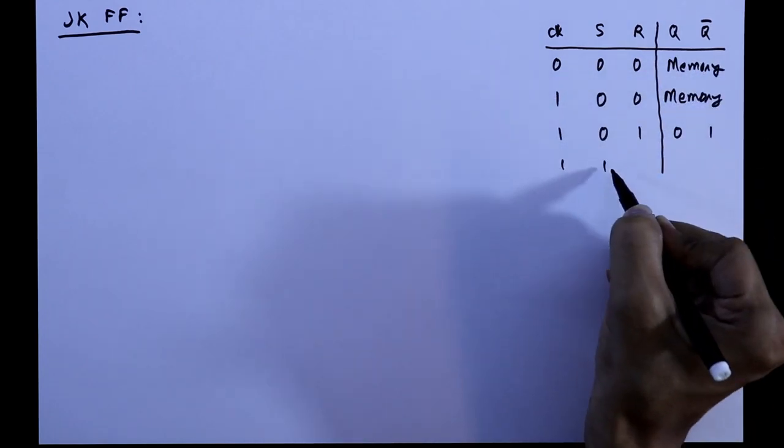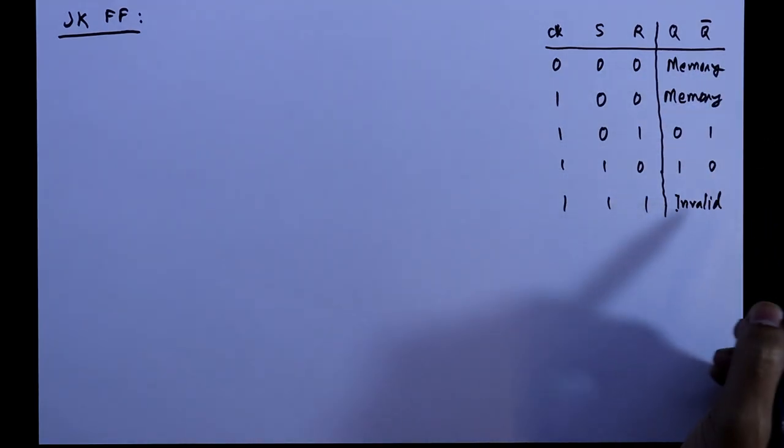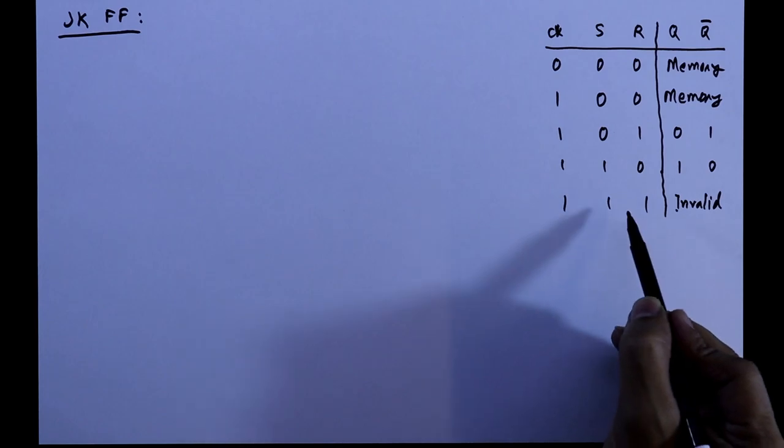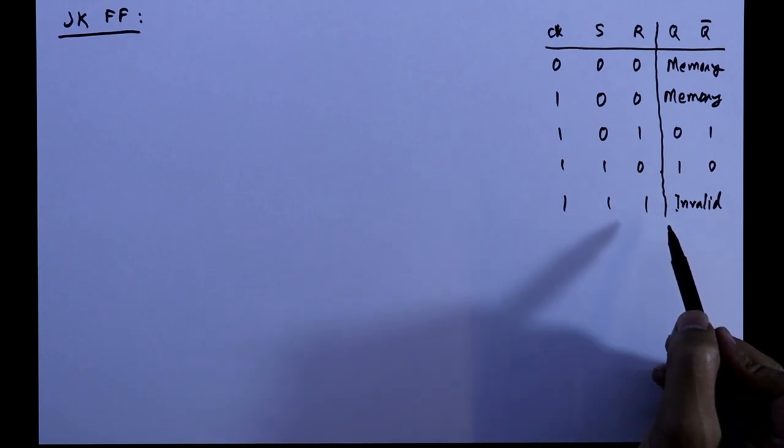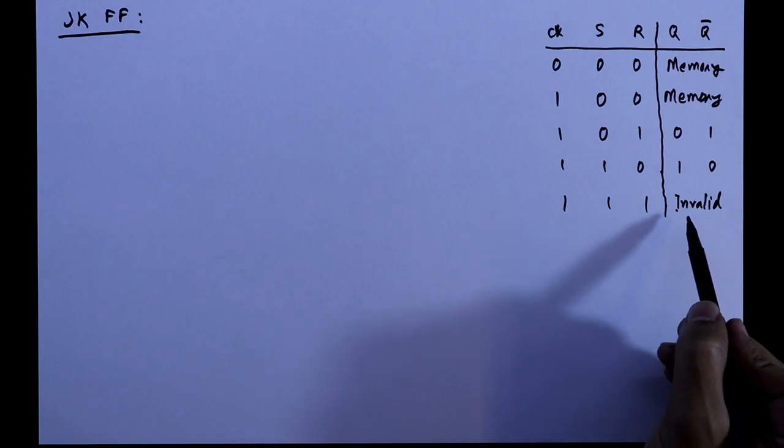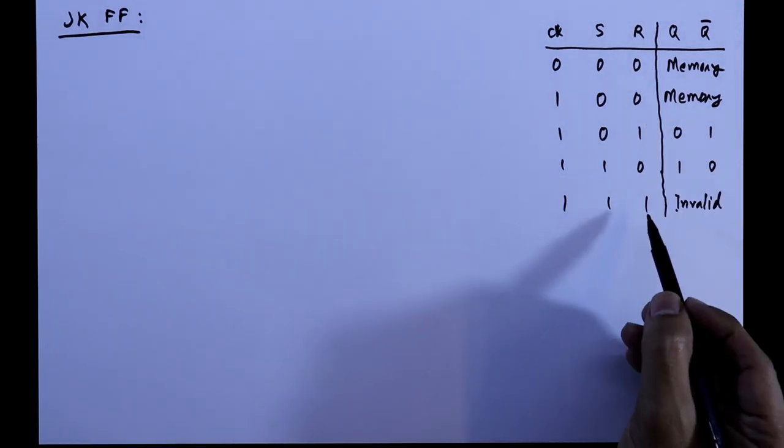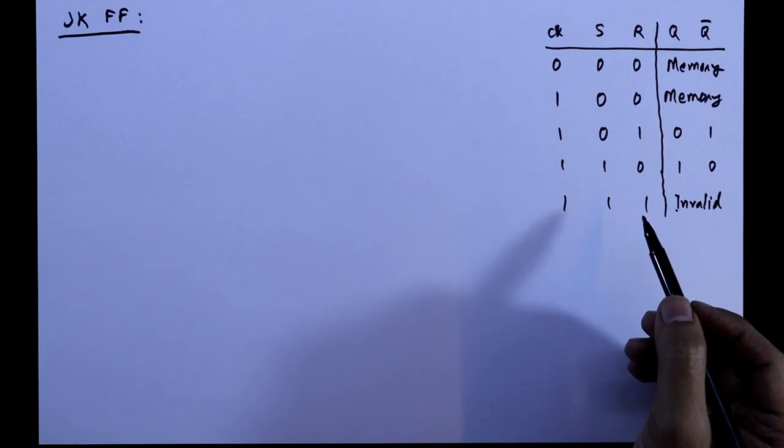Till now we have seen SR flip-flop and D flip-flop. This is the truth table of SR flip-flop. As you can see, when all the three inputs are one, then we are getting invalid as our output. So this output is not useful in SR flip-flop. To make it useful, we need to go for JK flip-flop.